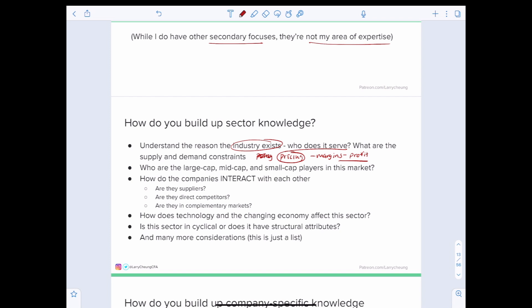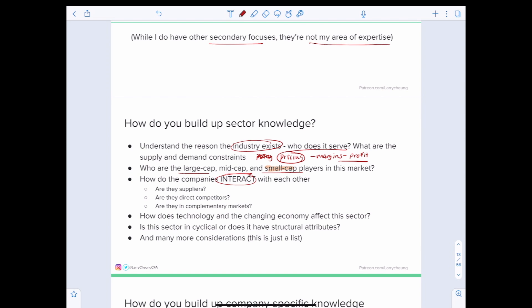Who is the end market? Who does this industry serve? What are the supply and demand constraints? The reason that question is important is that it helps you understand the average selling prices in that industry over time. If you understand average selling prices, you'll also have an idea of where margins and profitability is likely heading. You also want to have a full diagnosis of the entire market in terms of who are the large cap players, the mid cap players, and the small cap players, and how do the companies interact with each other. You also want to study how technology and the changing economy is likely to affect this sector and whether this sector is cyclical or does it have any structural attributes.